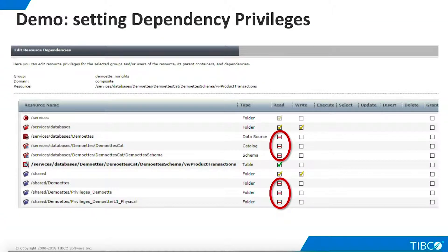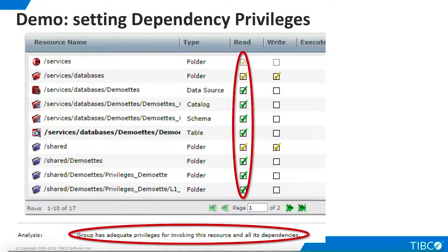We have added Read Privileges for the published resource, but we still need to add appropriate privileges for all the related resources. The Edit Resource Dependency page shows us the specific privileges we need to add. We simply click the appropriate checkboxes to add the privileges. When we finish adding privileges to this page, we see a message at the bottom that tells us we have the privileges we need. However, this message only applies to the current page. Note that there are two pages of dependencies in this example, so we must make sure we deal with all dependencies and move to the second page.